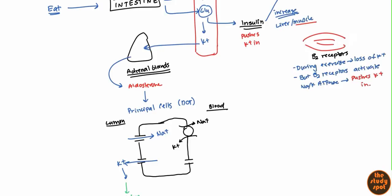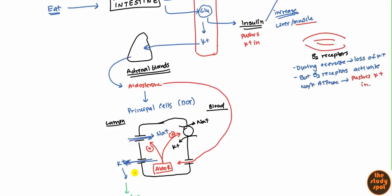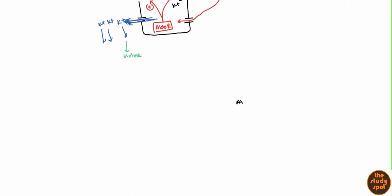Aldosterone can also enter the principal cell and activate the aldosterone receptor. This receptor will increase the number of sodium channels and the sodium-potassium ATPase. So aldosterone causes more sodium to be pumped inside and more potassium to be pumped outside, leading to more potassium leaving — causing hypokalemia and hypernatremia. This is generally how potassium is maintained.